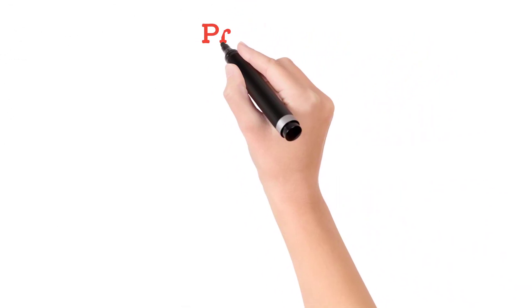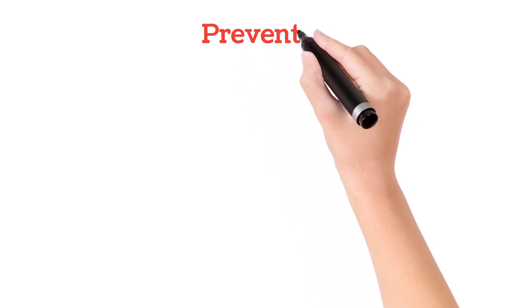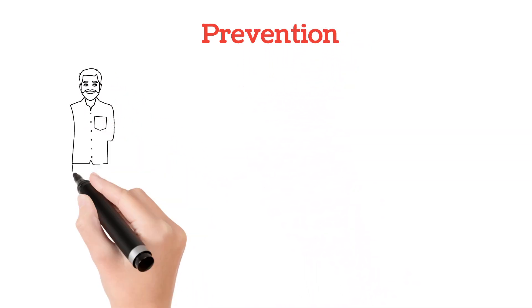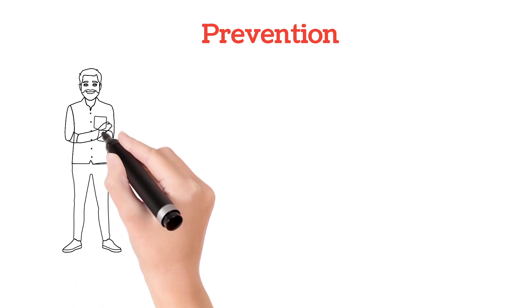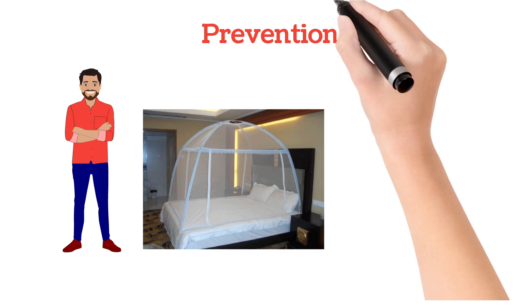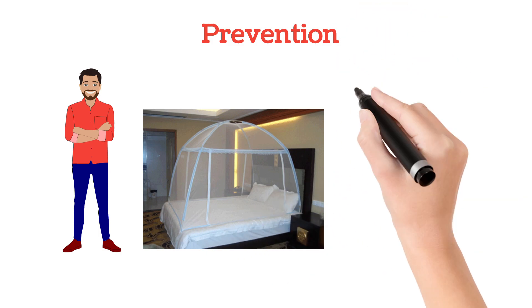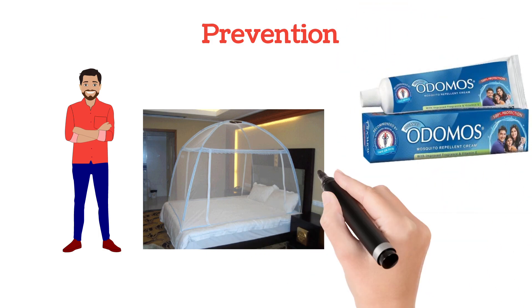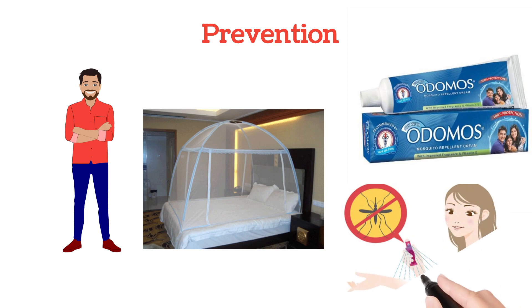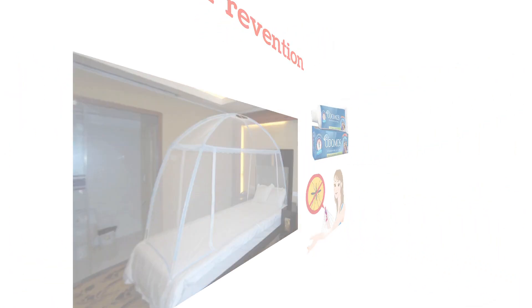We can prevent malaria by taking certain precautionary measures. When we go out, we should use protective clothing — wear long pants and long sleeves. We can also use bed nets, apply insect repellents like Odomos to the skin, and use insecticides to reduce mosquitoes.